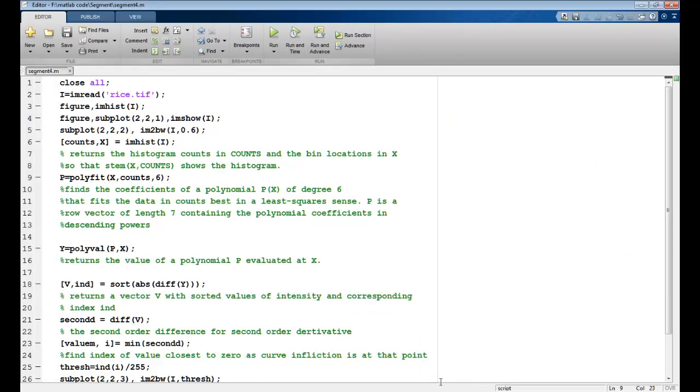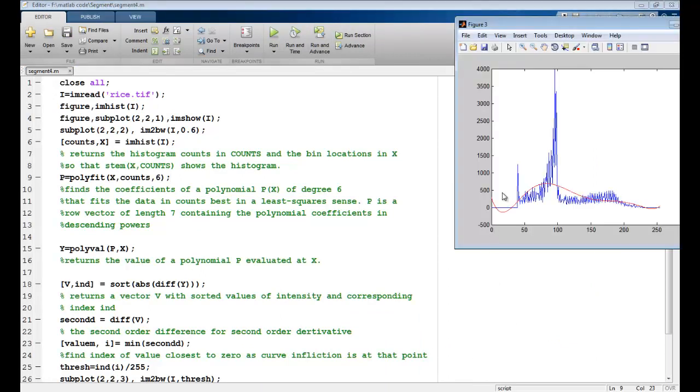You can see the polynomial here. So this is what I am getting here. This is the kind of polynomial I am fitting. Whereas these are the values which I actually had. So this is the fit which is best here.